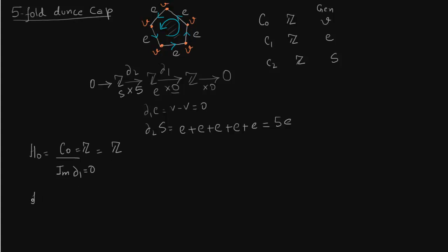For H1: the kernel of delta1 — since delta1 is multiplication by 0, everything maps to 0, so the entire C1 is the kernel. Since there are no cells of dimension 3 or higher, the image of delta3 is 0. So H1 = Z / 5Z = Z/5Z.